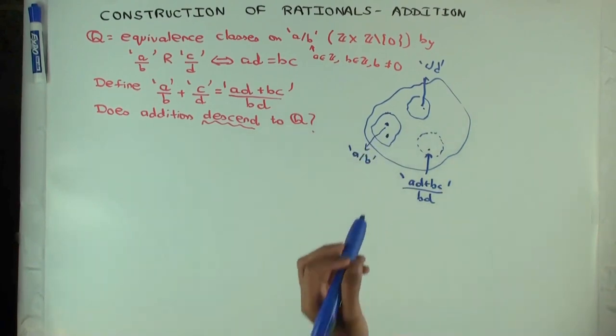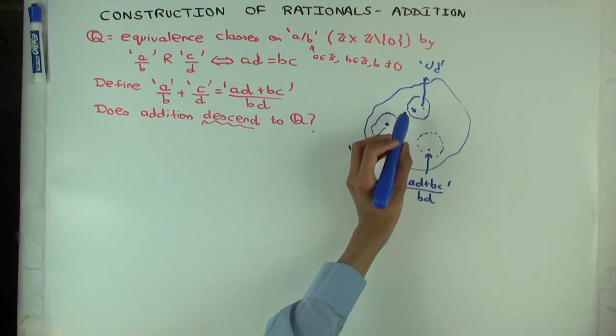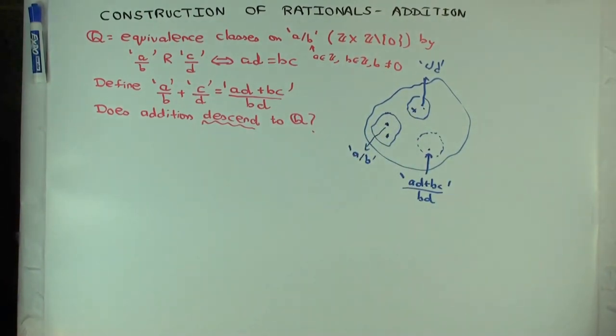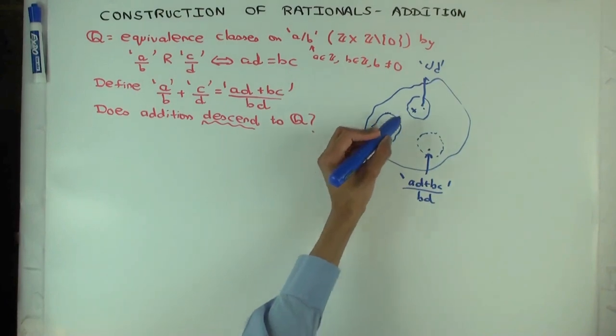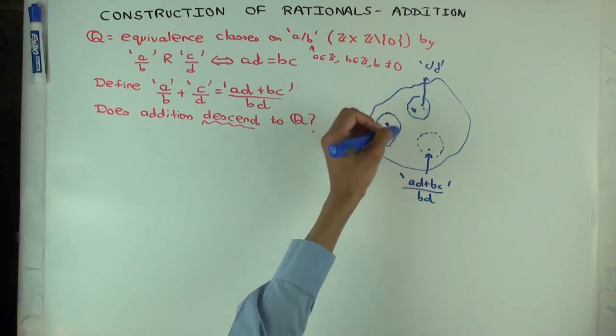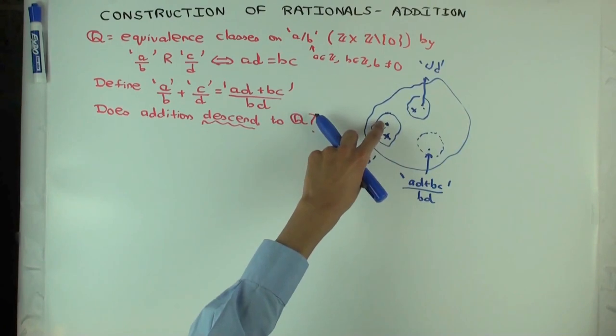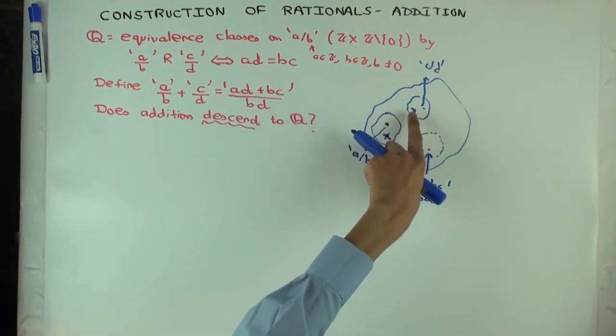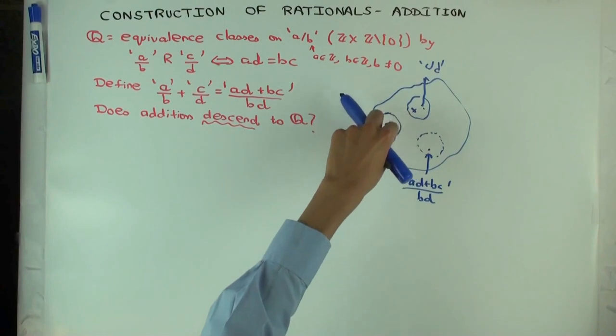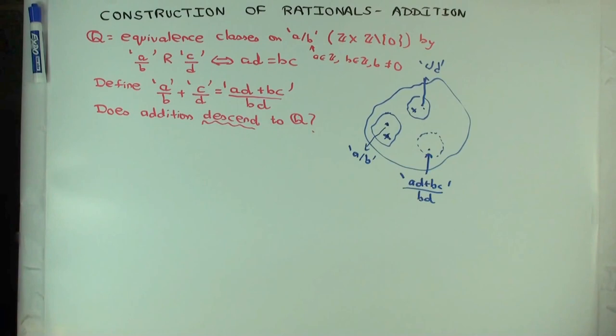So I picked another element which looks different but is equivalent. And again here I pick another element which is in the same equivalence class as c over d but has a different look. How do I know that when I add these two elements, these moved elements, which are actually the same as rational numbers? How do I know whether when I add these, I land up in the equivalence class of this? Did you get my concern?